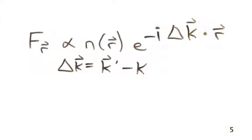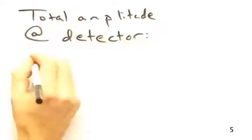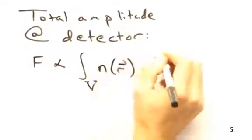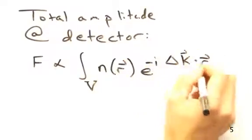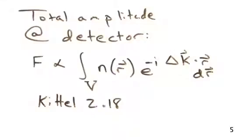Well, not so fast. This expression is for one particular position within our sample. To get the total amplitude, we need to integrate over the sample volume.